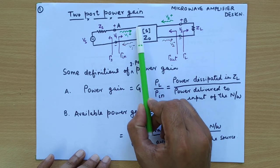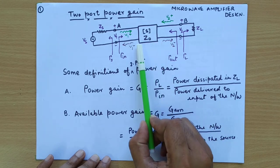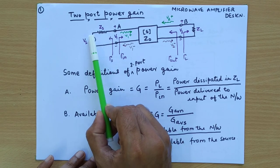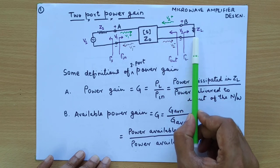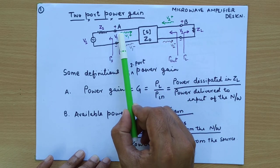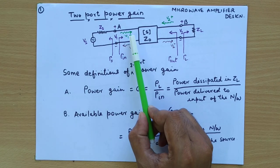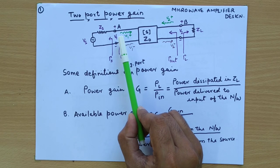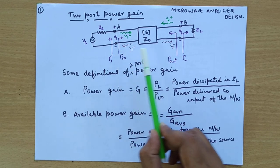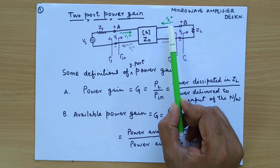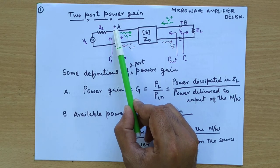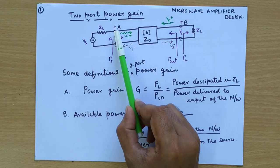For any Microwave Amplifier Design, we need one transistor having known S-parameters, and there will be a source impedance with a voltage source and a load impedance for the complete amplifier design. As we know from the S-parameter topics, V1 plus and V1 minus are input incident wave variable and reflected wave variable at port 1. Similarly, V2 plus and V2 minus are incident and reflected wave variables at port 2. Let us consider two points in this amplifier, A and B.